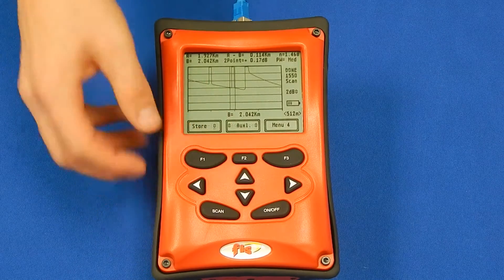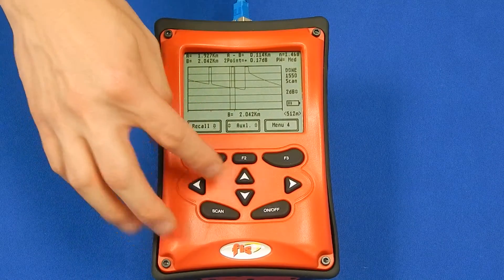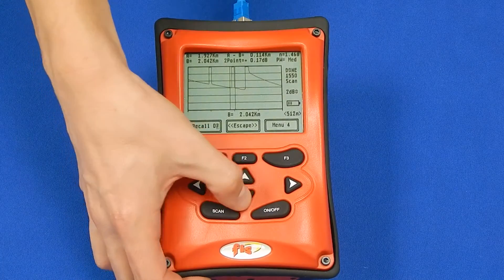To recall the trace, press F1 and arrow to recall. Arrow to the number trace you wish to recall and press F1.